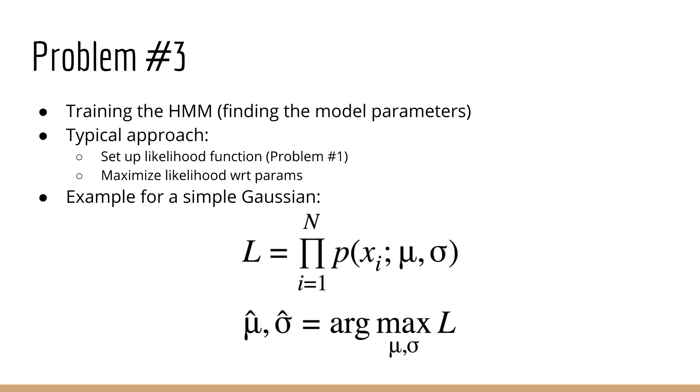And therefore, this gives us yet another reason to solve problem number one. Because problem number one gives us the likelihood, this means that solving number one is necessary, because we must be able to calculate our objective function so that we can maximize it.